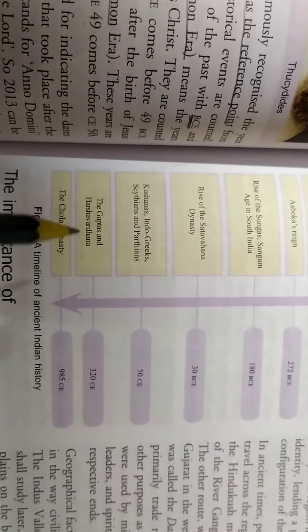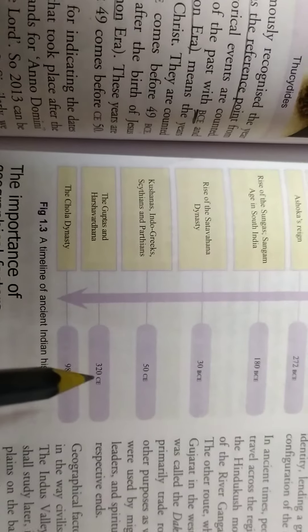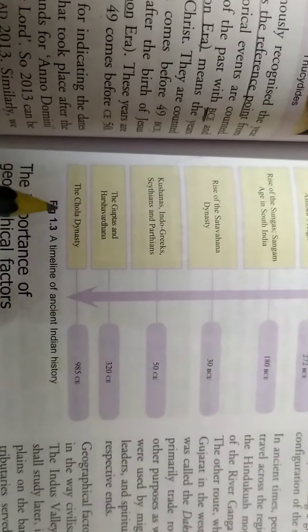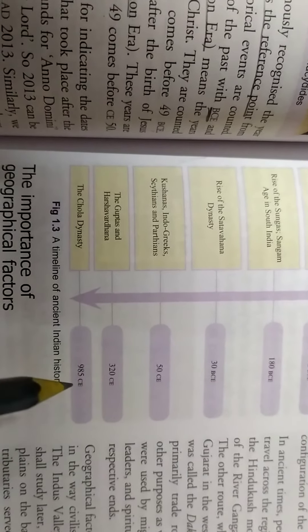The Guptas and the Harshavadhana, 320 CE. And the last is the Chola dynasty that is 985 CE. So it is a timeline of the ancient Indian history.